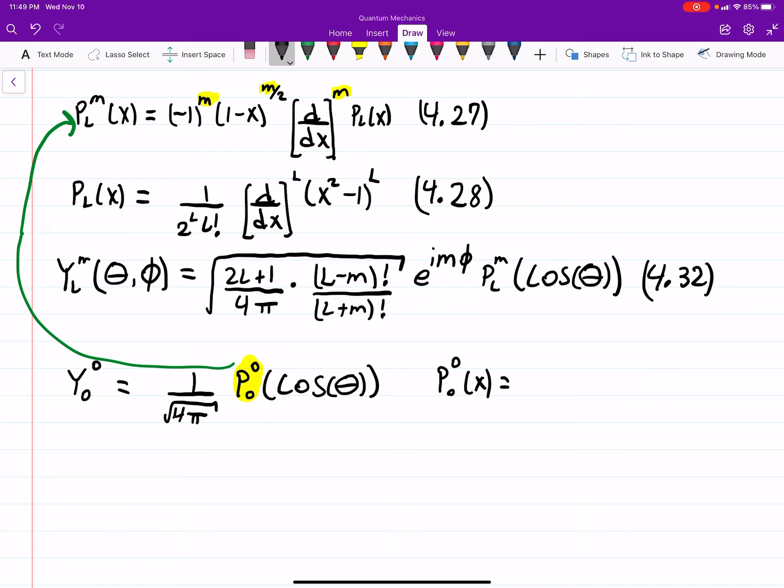I'm left with P sub 0 of x. But then what is P sub 0? Well, again, we can go right here and plug in. And if we find P sub 0, it's again going to be pretty boring because basically everything goes away, and we're left with 1, which is also equal to this.